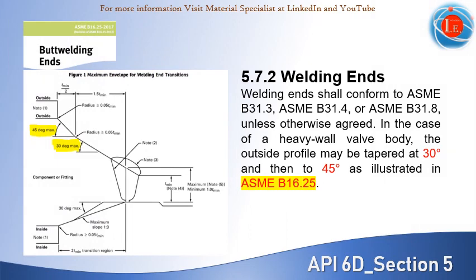API 6D valves may be configured with a flanged end connection or weld end joint. Unless otherwise agreed, welding ends shall conform to ASME B31 piping and pipeline codes shown in this slide. For valve bodies having heavy wall thickness, the outside profile may be tapered at 30 degrees and then to 45 degrees as illustrated in ASME B16.25, as shown on this slide.